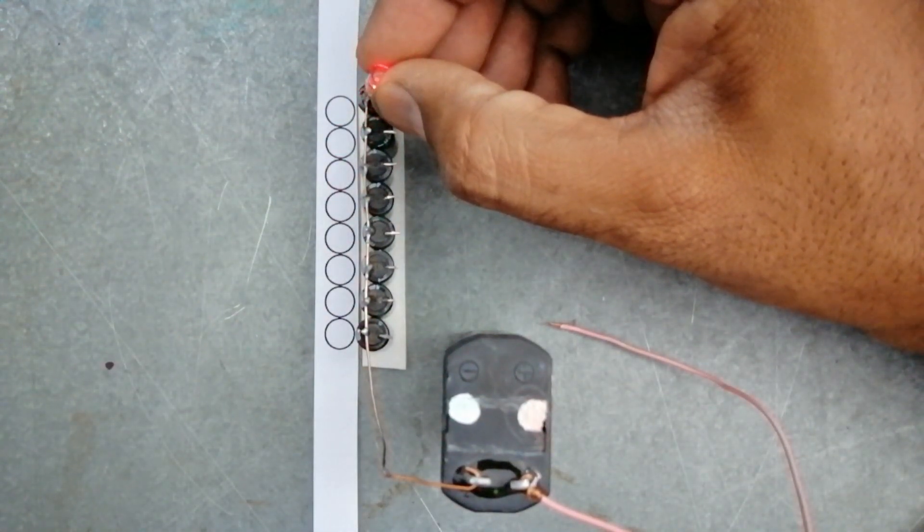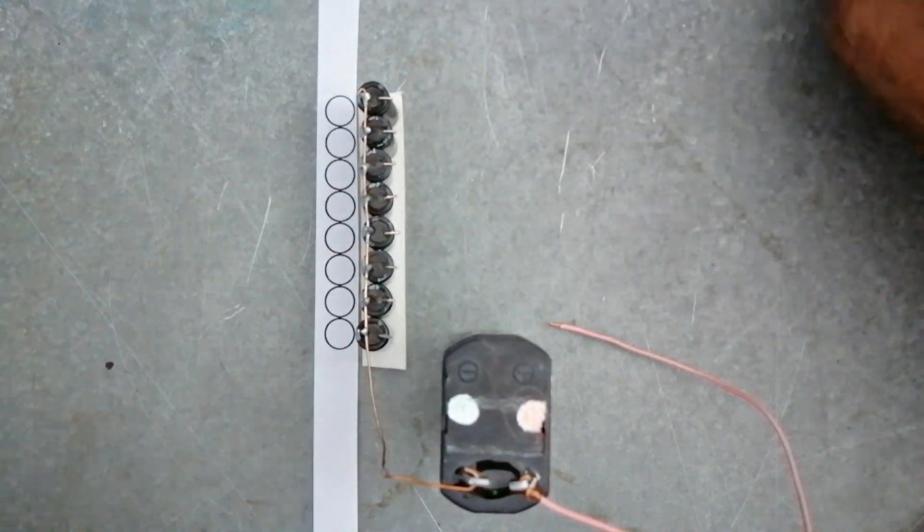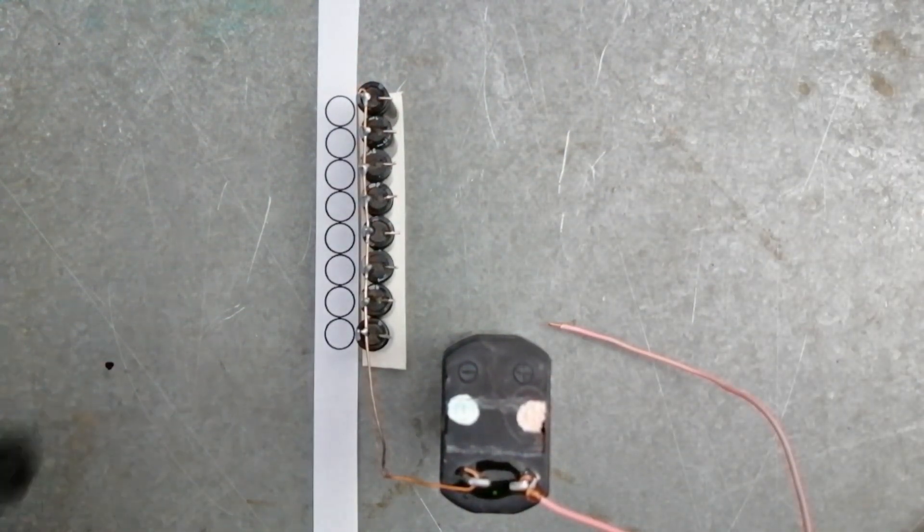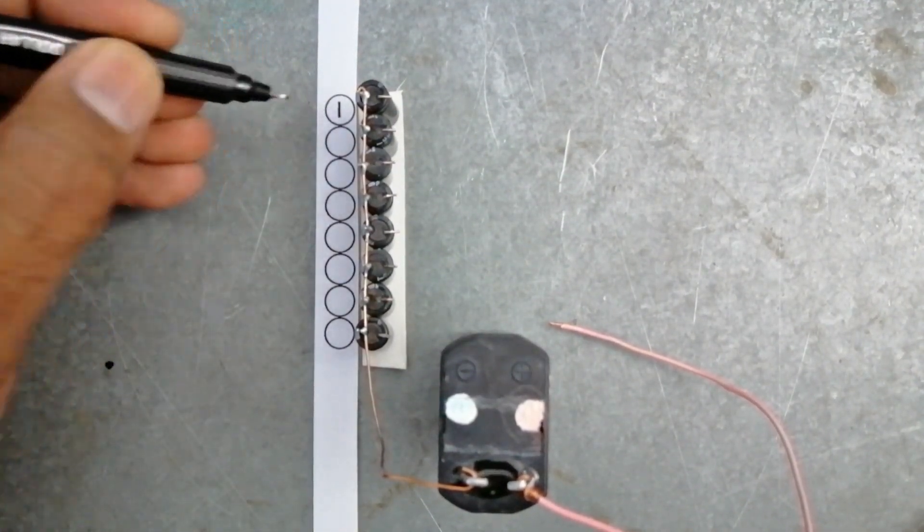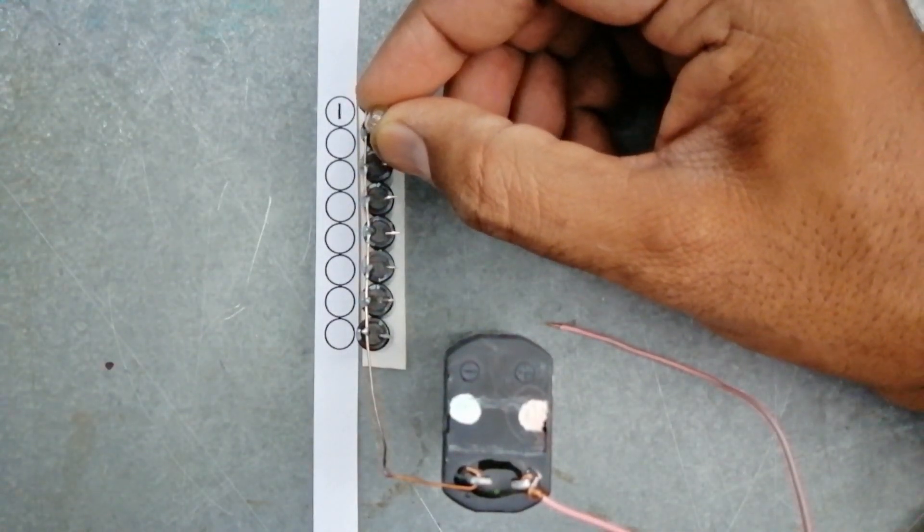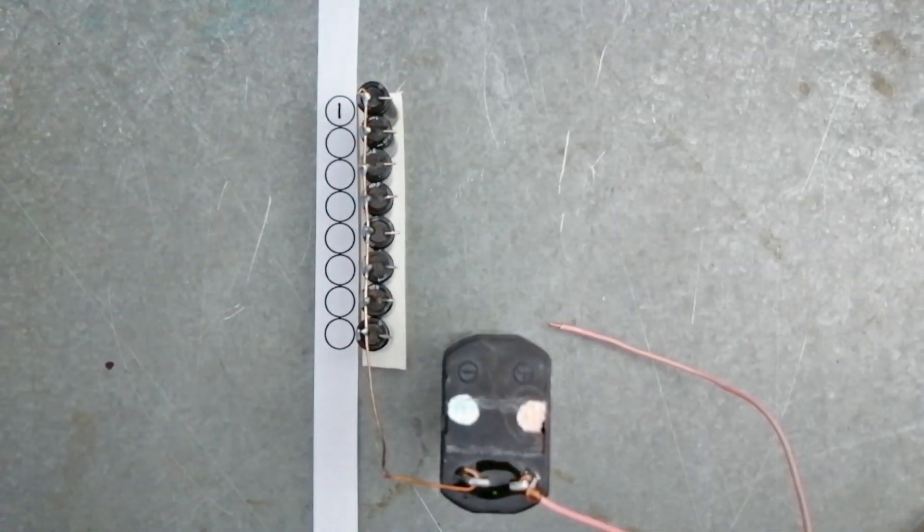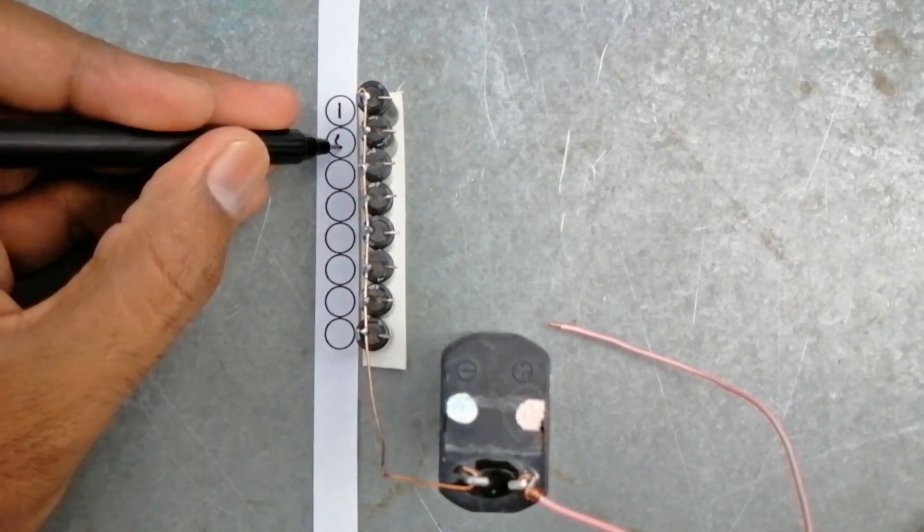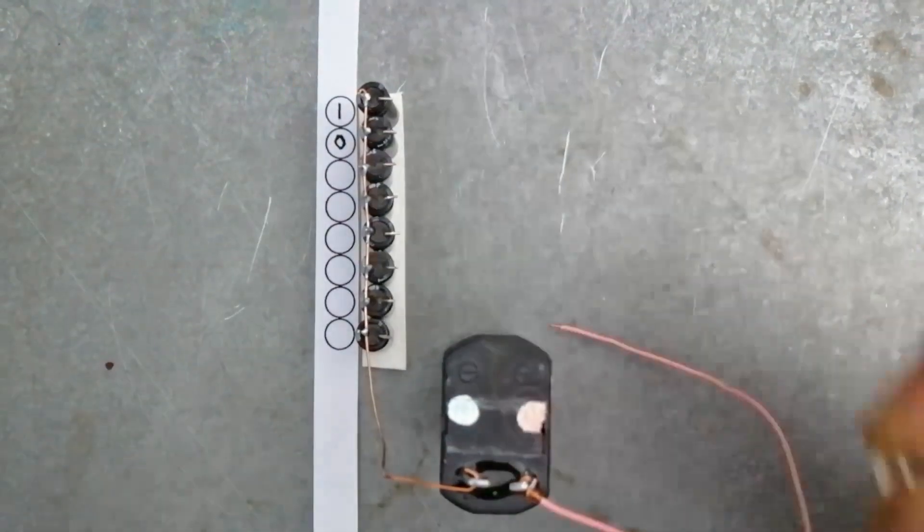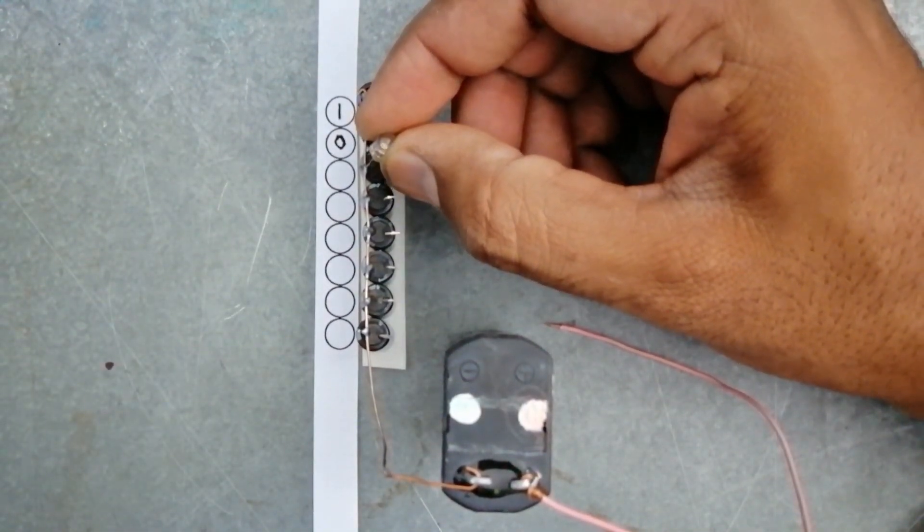Great, our bulb is lighted. That means it has a value of one. Let's write it. Check the next bit. There is no light; it consists of zero. Put zero.